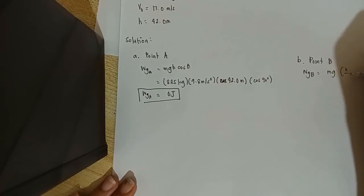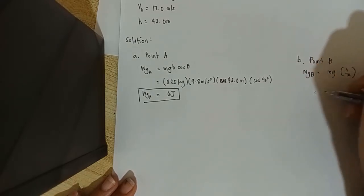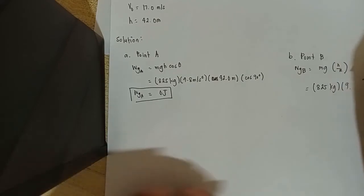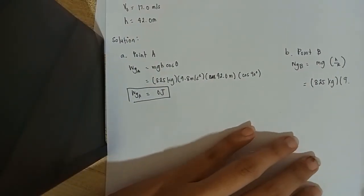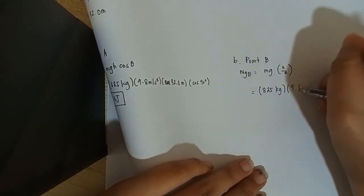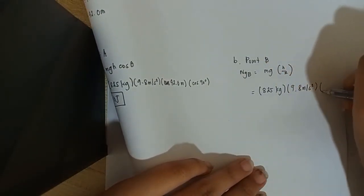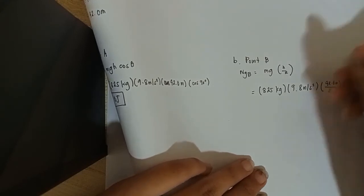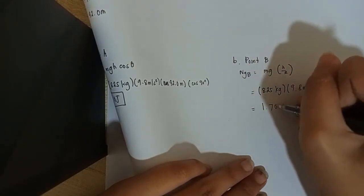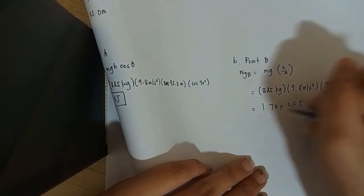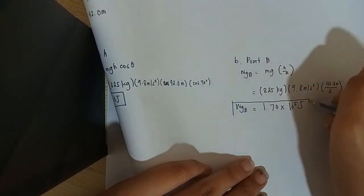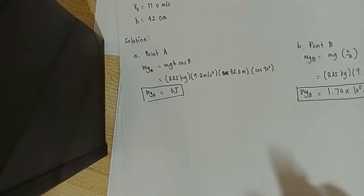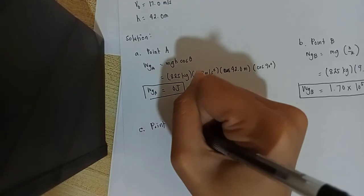For point B, we have our formula mgh. Our height there is divided by two as you can see, it's already given in the figure. So again, substitution: 8.25 kilograms, 9.8 meters per second squared, 42 over 2 that will be 21 meters. So our work at point B is equal to 1.70 times 10^5 joules.